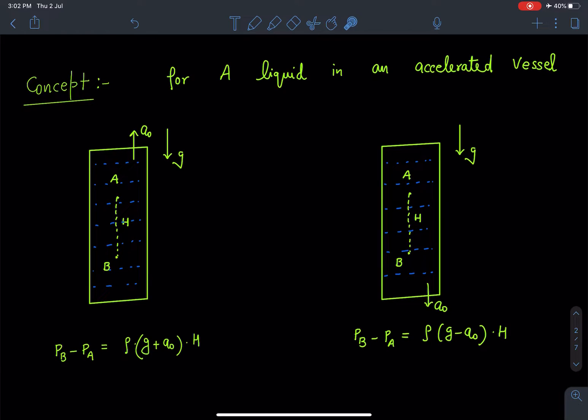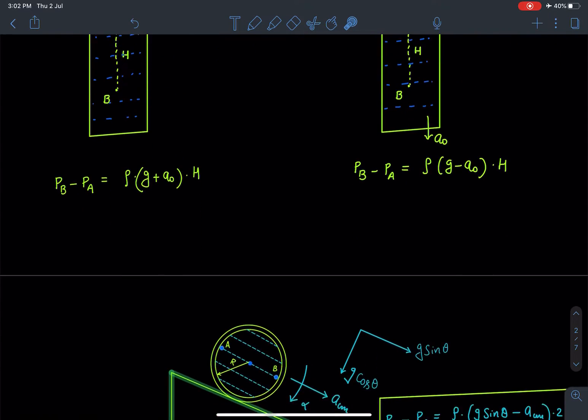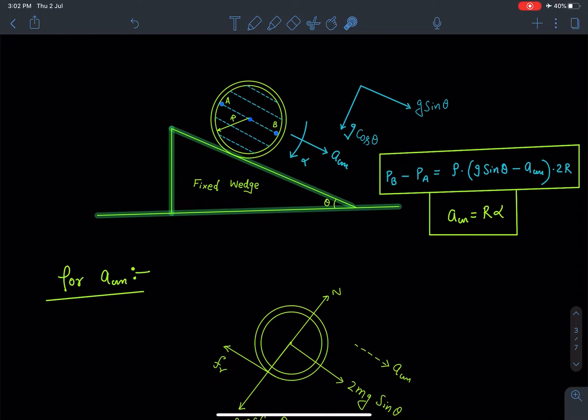So we are going to use basically this result where acceleration of vessel and g both are in same direction. So let's solve this problem now. As you can see in this diagram here, if we resolve the component of g along the incline which will be g sinθ and perpendicular to the incline which is going to be g cosθ.